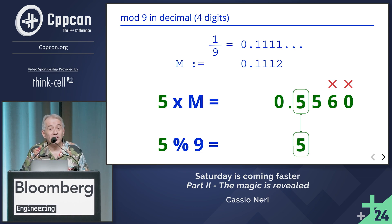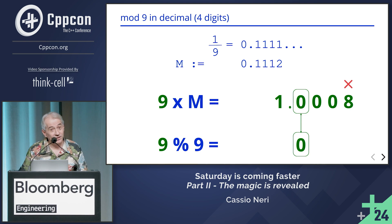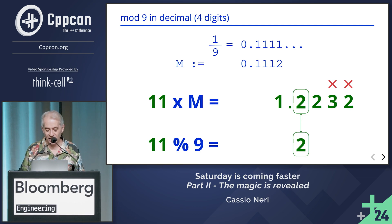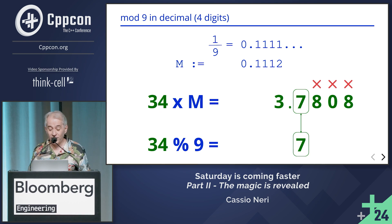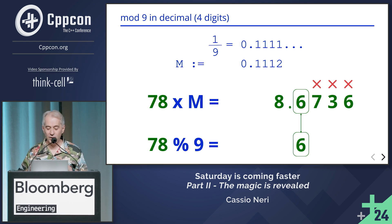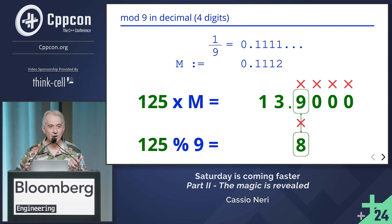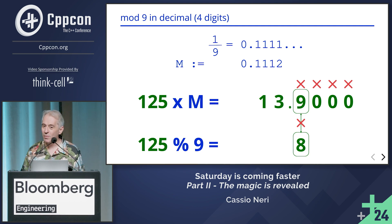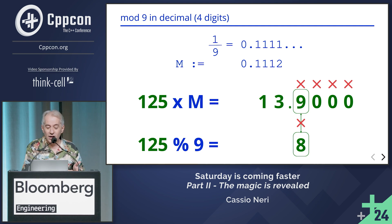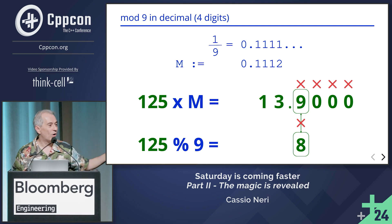Now it's the third digit after the dot that is wrong. At some point it's right again, but then it's wrong again and stays wrong. Now it's the second bit flipping between right and wrong, eventually staying wrong. And then boom — the first digit after the dot no longer matches the modulo. But it did match up to that point. So what if I want to go beyond 125?